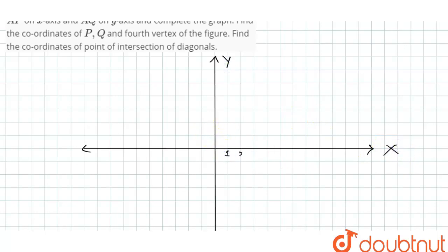So this will be 1, 2, 3, 4, 5, 6. This will be minus 1, minus 2, minus 3, minus 4, minus 5. This will be 1, 2, 3, 4, 5. This is negative Y-axis. This is minus 1, minus 2, minus 3, minus 4.